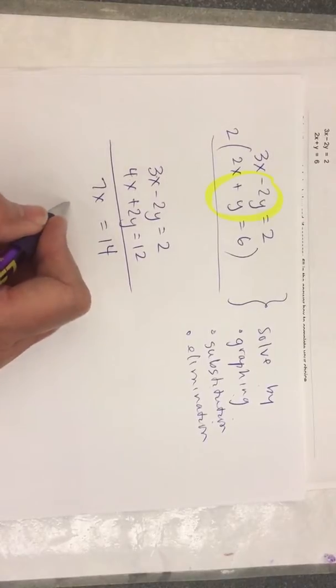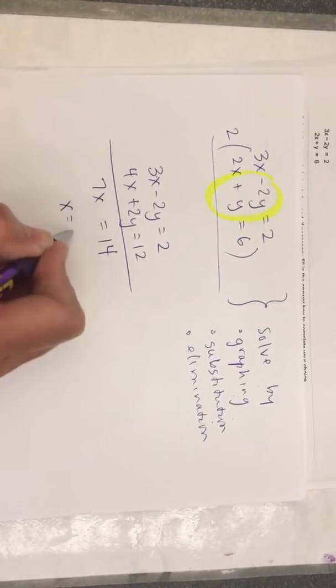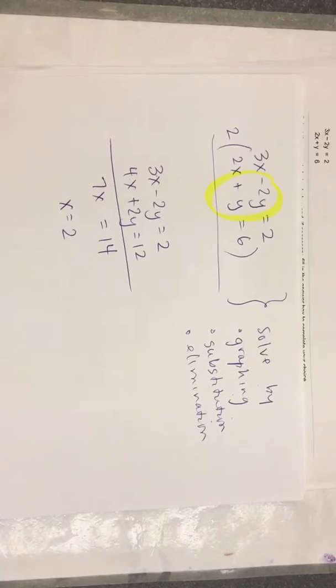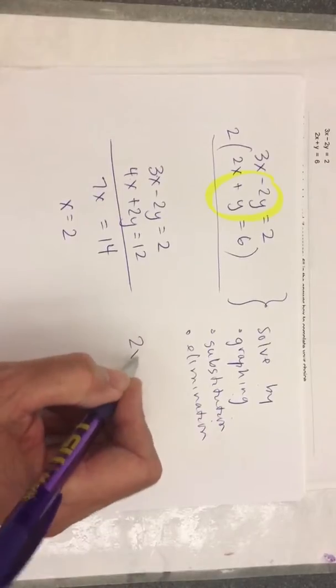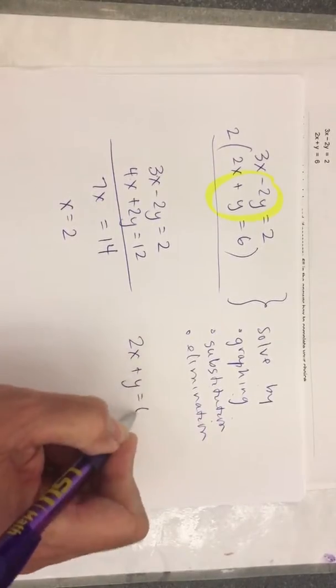When you divide by 7, what do you get? X is 2. Substitute that into either of the original equations. I'm going to go with 2x plus y equals 6.